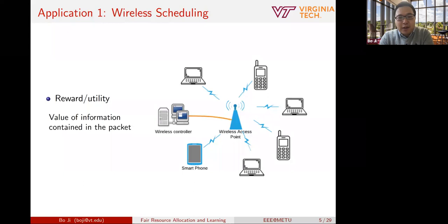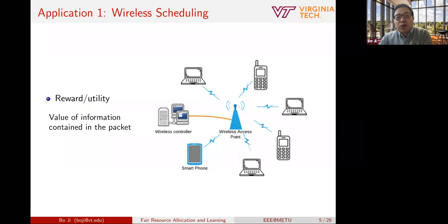The first application is about wireless scheduling. There are multiple users competing for channels to transmit data to a common wireless access point. When a packet is successfully transmitted, the AP receives some reward, which could represent the value of information contained in the packet. Due to interference, the AP needs to choose one user to transmit at a time. Apparently it wants to choose the user that can bring the highest reward, but the challenge is that those rewards are unknown in advance. We have to make such decisions in the presence of uncertainty.